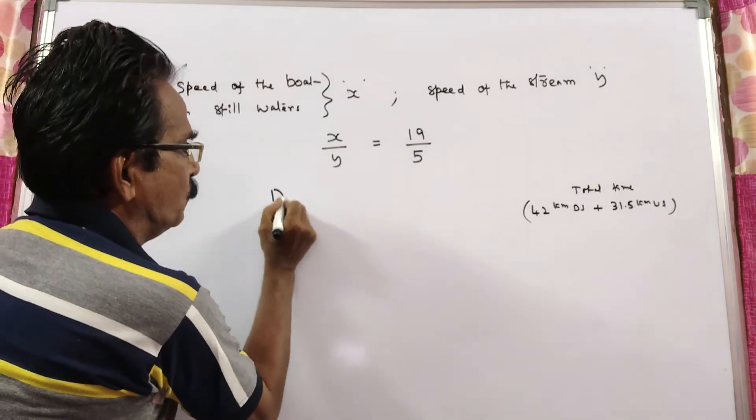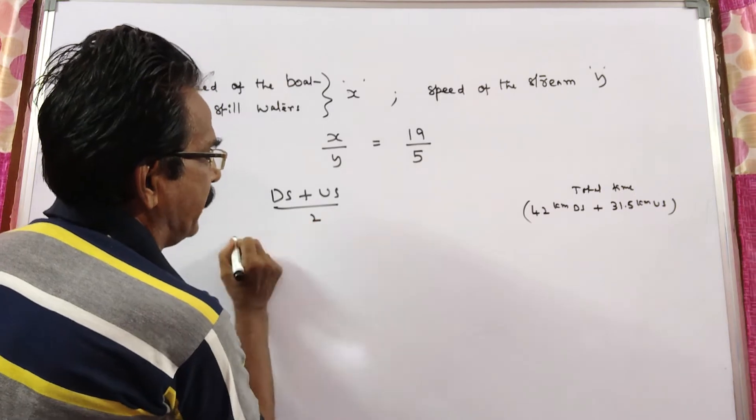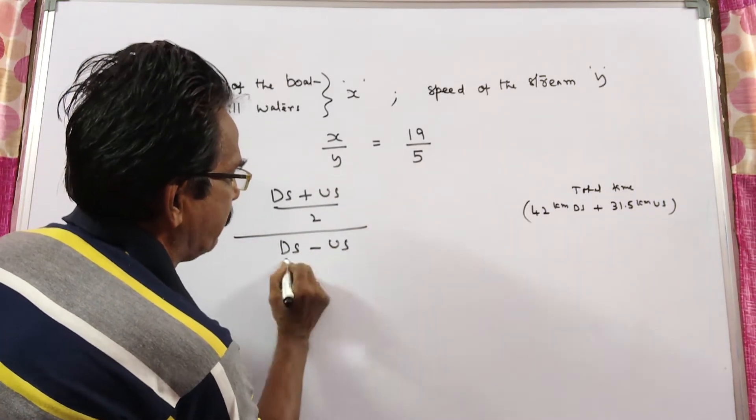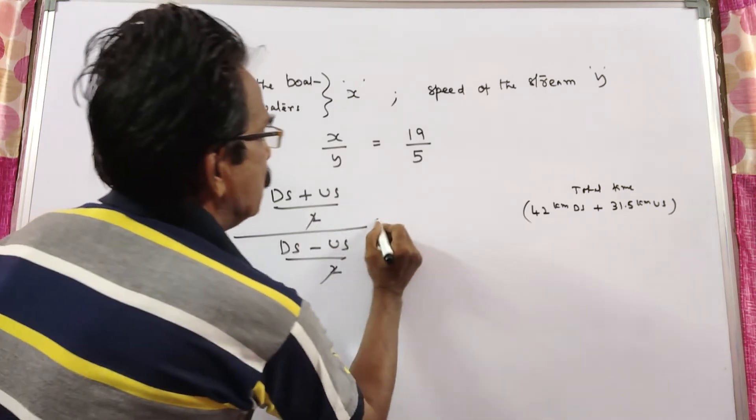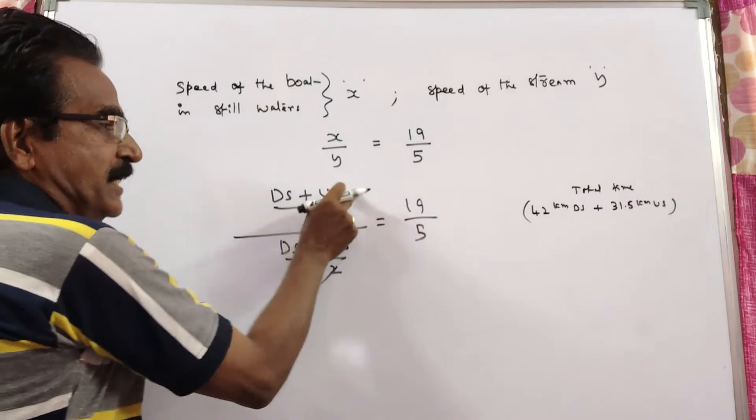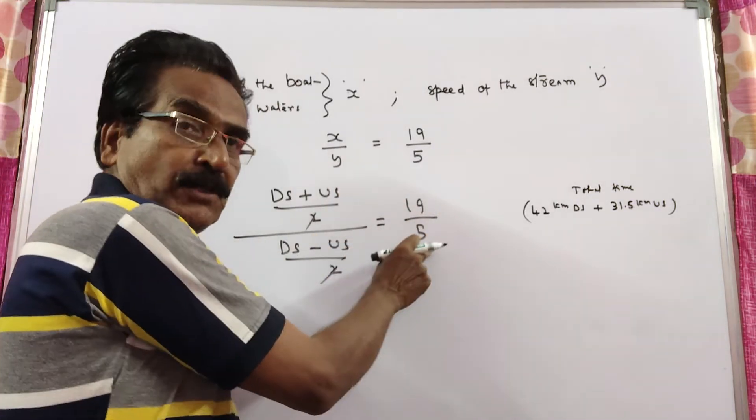we know X is equal to DS plus US by 2. Downstream plus upstream by 2. And Y is DS minus US by 2. 2 gets cancelled. So, DS plus US is equal to 19. DS minus US is equal to 5.